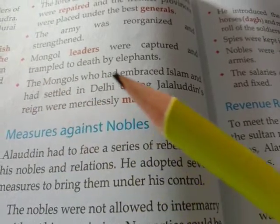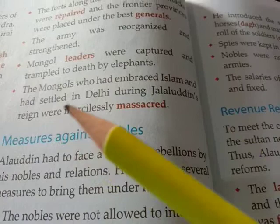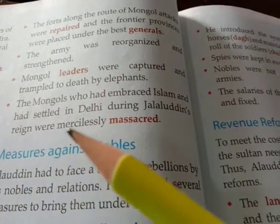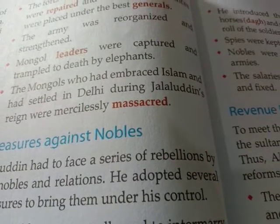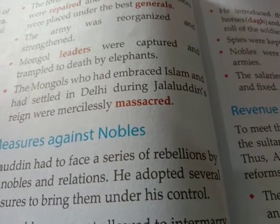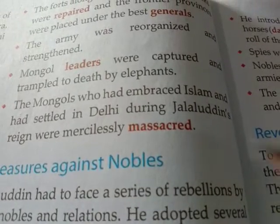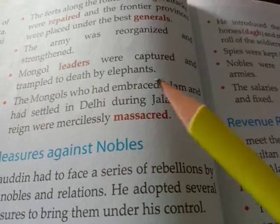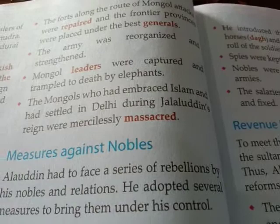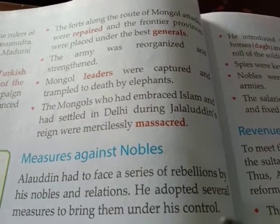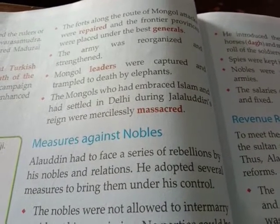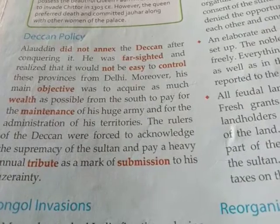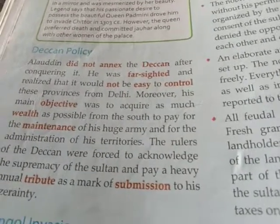Additionally, the Mongols who had embraced Islam and had settled in Delhi during Jalaluddin Khilji's reign were mercilessly killed, so that these Mongols never dared to attack Delhi again. Students, please go through these two points carefully and study your lessons so that you are able to understand. Thank you so much.